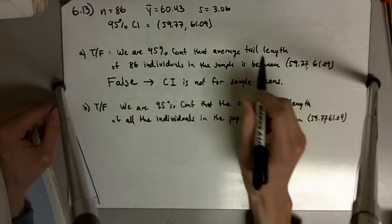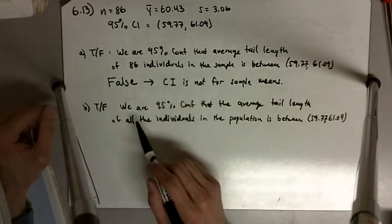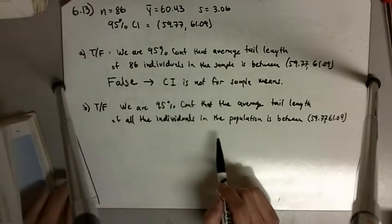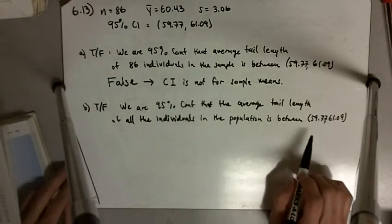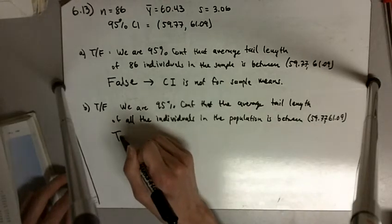We know the sample mean is 60.43. Part B says: we are 95% confident that the average tail length of all the individuals in the population is between 59.77 and 61.09. This is true.